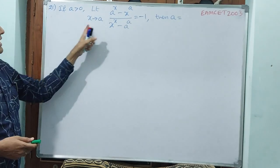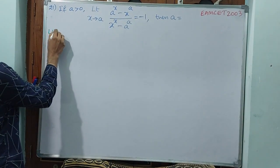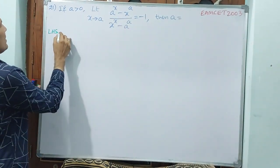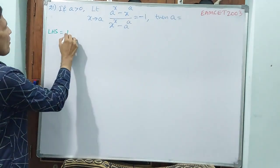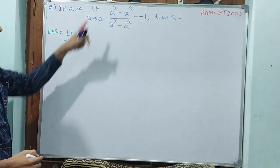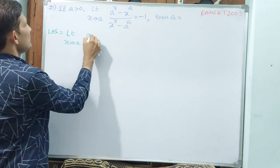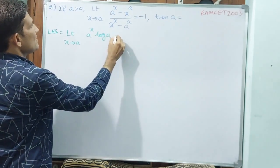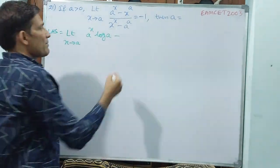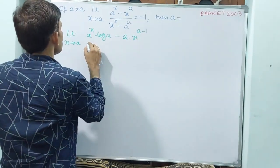See, L'Hôpital's rule — but I am taking only LHS, because RHS is minus 1. LHS is equal to limit x tends to a: differentiating the numerator gives a power x times log a, minus a times x power a minus 1. This is the case of the numerator.